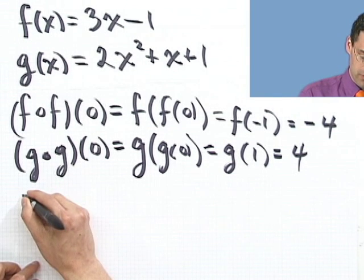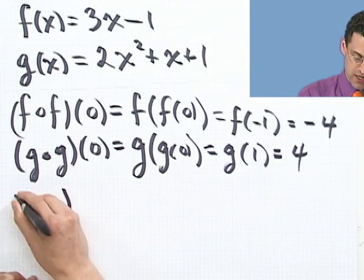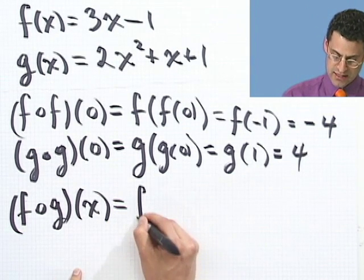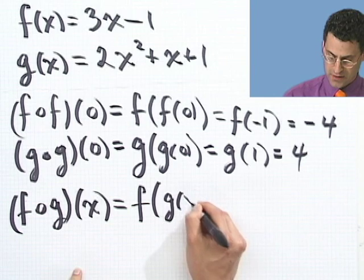And in fact, what you can do now is actually compute the functions in general. Instead of particular values, we can do the following. For example, what would f composed with g of x actually be? Well, now we see a pattern. It's f of g of x.